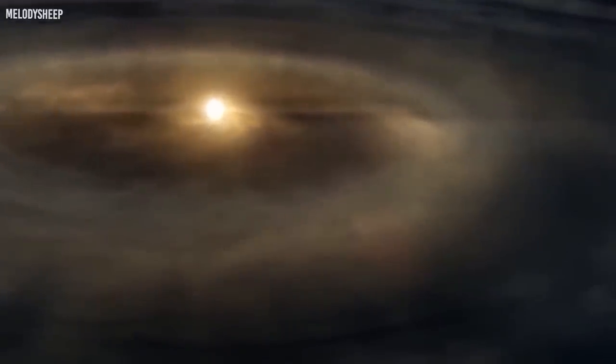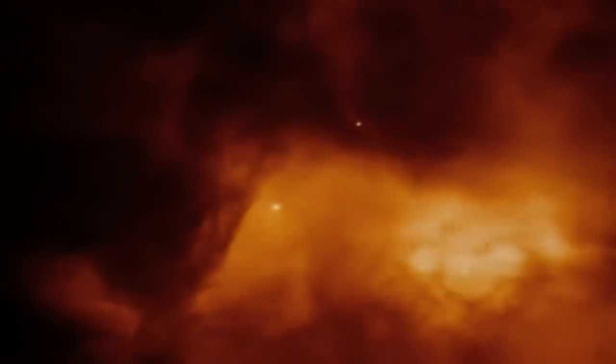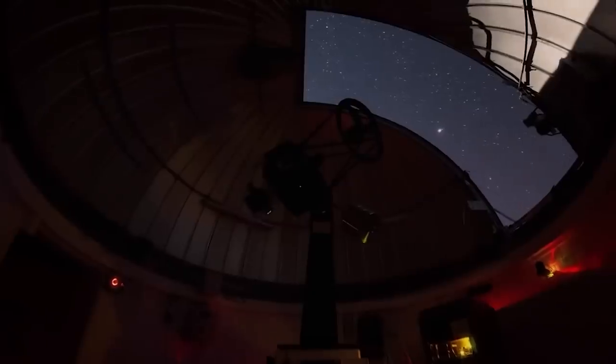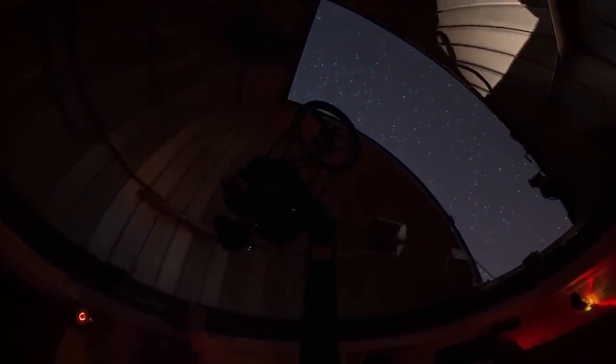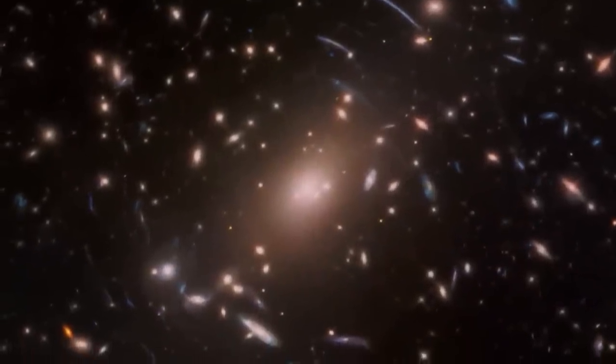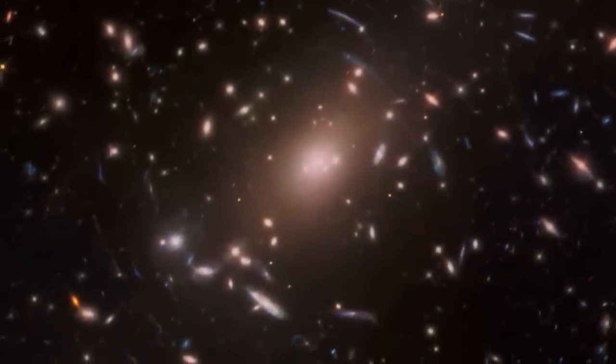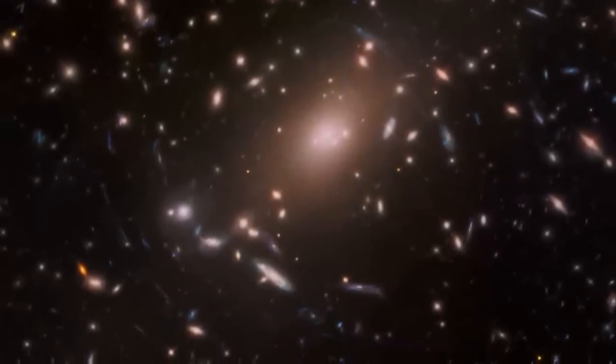Instead, it's better to think of the Big Bang as the simultaneous appearance of space everywhere in the universe. Our understanding reveals that our universe went through a long-lasting cosmic period, only interrupted by reionization in space. Before this event, our universe was pitch black and dark. The let-there-be-light moment for the universe occurred 400 million years after the Big Bang. For 400 million years, the universe remained in darkness because there were no stars or galaxies.